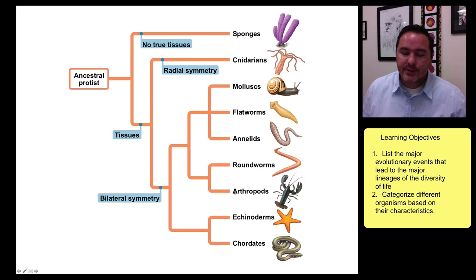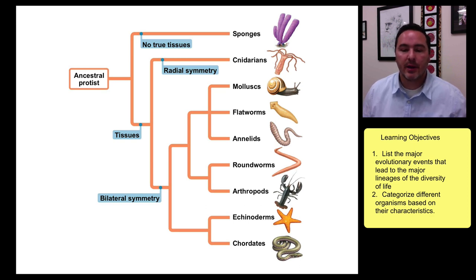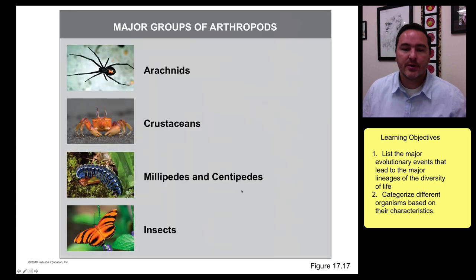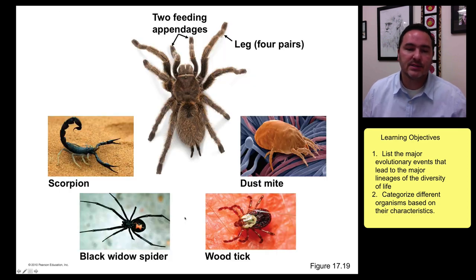Closely related to the roundworms are the arthropods. They both have exoskeletons that they shed when they need to grow bigger — they're called the Ecdysozoa, which is where they're closely related. Of course, you're familiar with many arthropods like the arachnids, crustaceans, millipedes, centipedes, and insects.